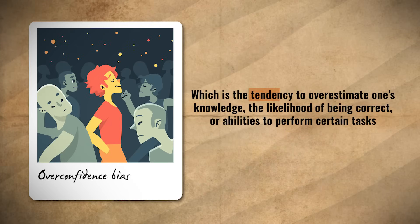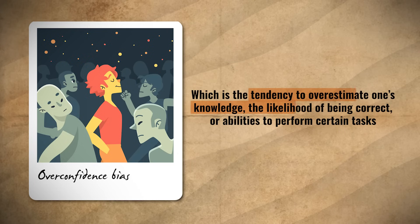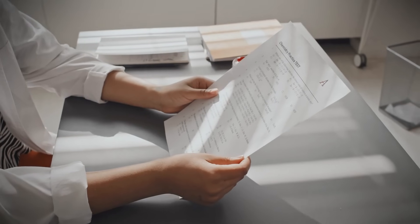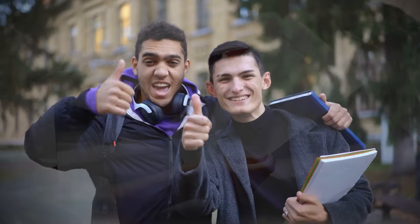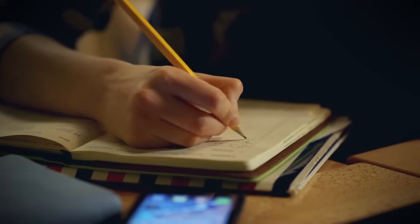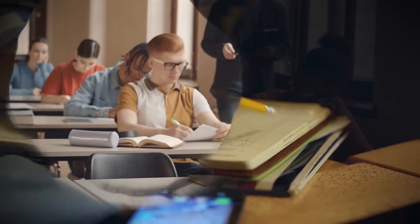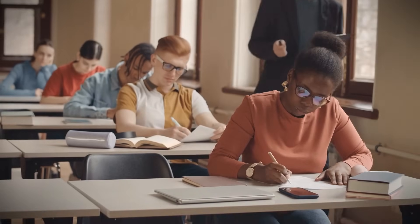Which leads us to our next concept: overconfidence. This is the tendency to overestimate one's knowledge, the likelihood of being correct, or an individual's ability to perform certain tasks. For instance, a student who consistently gets A's in high school might become overconfident in their ability to perform well on challenging exams in college, underestimating the need to study and prepare. As a result, they may not study, which may result in them struggling on their college exams. Overconfidence can lead an individual to make poor decisions or engage in risky behaviors, since they may take on tasks they are not prepared for.